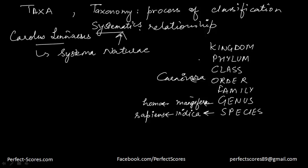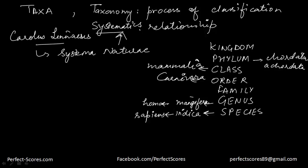Then we have phylum. For example, all animals that have a proper spinal cord are called members of the phylum Chordata. Similarly we have Chordata and Achordata — the ones that do not have any cord. And finally we have kingdom — usually it's two kingdoms: the animal kingdom and the plant kingdom.